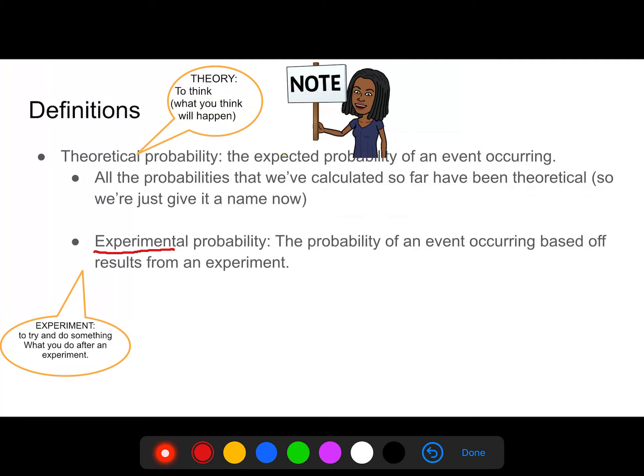Definition, theoretical probability. All the probabilities that we have been doing so far are the theoretical ones. So just looking at, if I have a coin and I flip it twice, what's the probability of that event occurring? That's really what theoretical probability is.